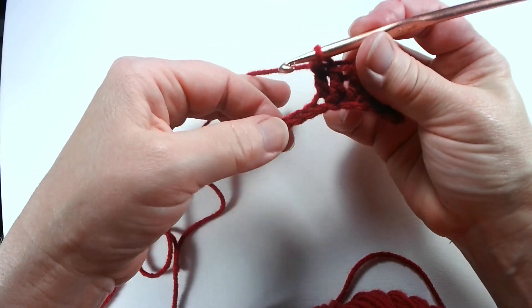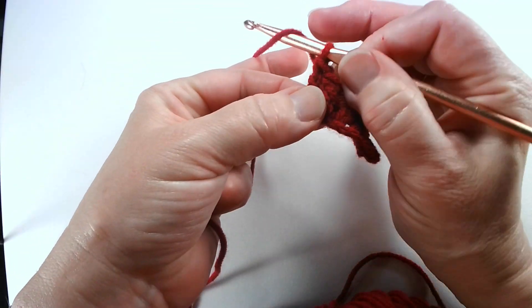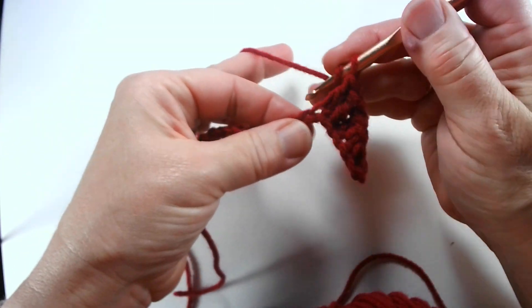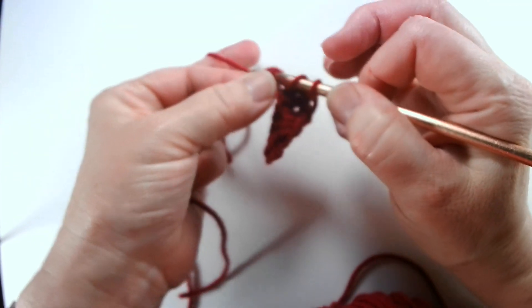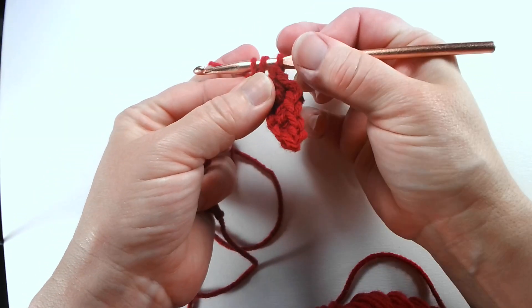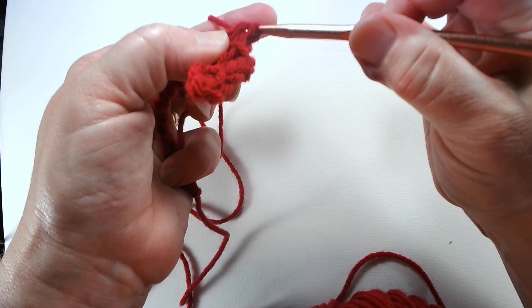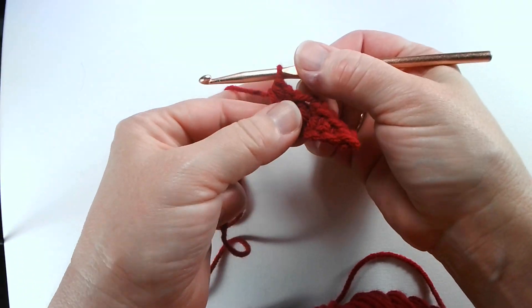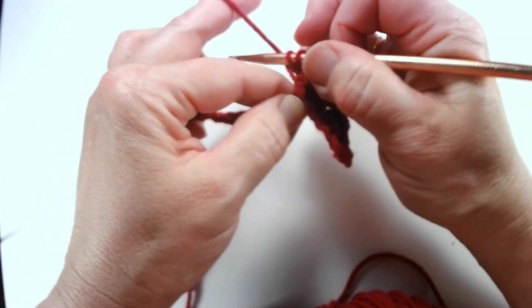There's something called a half double which you kind of combine both of those where you wrap through the next space. You wrap again. You pull it through. You have three on your hook. Wrap again and pull through all three. That is a half double and that's used a fair amount too.